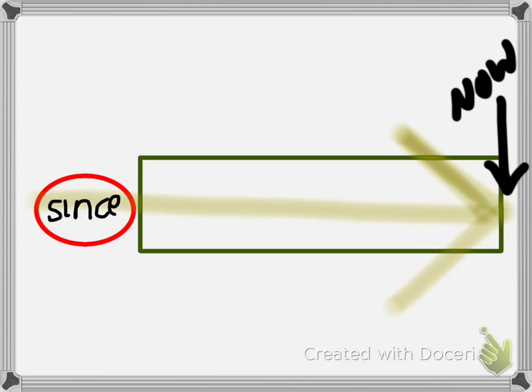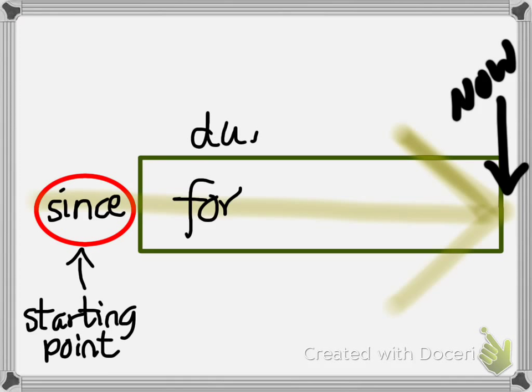If you think of it graphically, it might look like this. If now is at the right of the screen, and we've got two different points, we can either refer to when the action began, the starting point of the action, or we can talk about how long it happened for, the duration of the action.